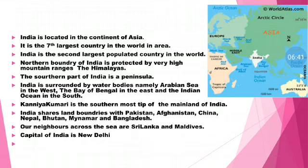The Himalayas stop the cold winds blowing from Central Asia during winter. Because the Himalayas are there, those cold winds cannot enter our country, and that is why we don't have that much severity of cold compared to other countries. The Himalayas also trap the monsoon winds from the Arabian Sea and Bay of Bengal, and this helps bring rain to India.